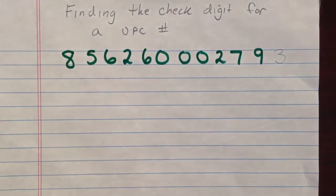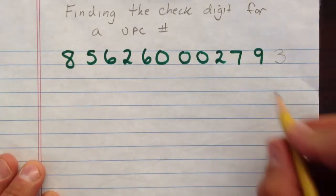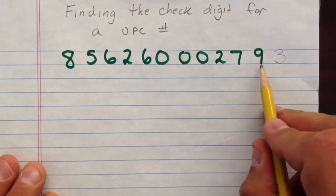So we're going to use that to find the check digit and to check that out. So, we start again by starting on the right side, multiplying every even position digit by 3.